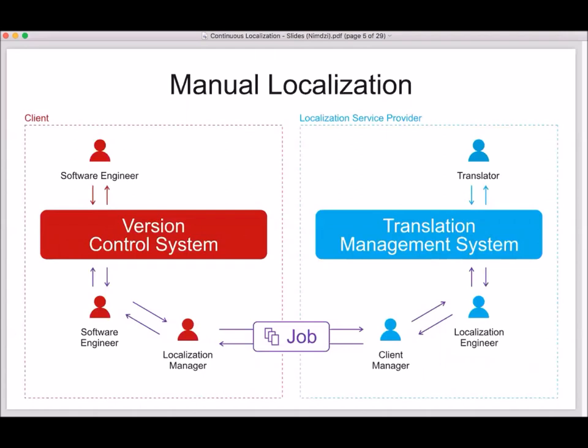This is a high-level overview of how manual localization works. If you are developing a software product — and we'll be mainly discussing software development and localization today — you have a version control system where you have all the files. On the localization vendor side, there's a TMS, a translation management system, where translators work. With manual localization, you periodically gather some files and send them over to the localization agency. That process requires multiple people handing files to the next person. Usually those files are sent by email, and the process is a little bit slow. I also noticed we have some questions already, so we'll cover as many as we can today.